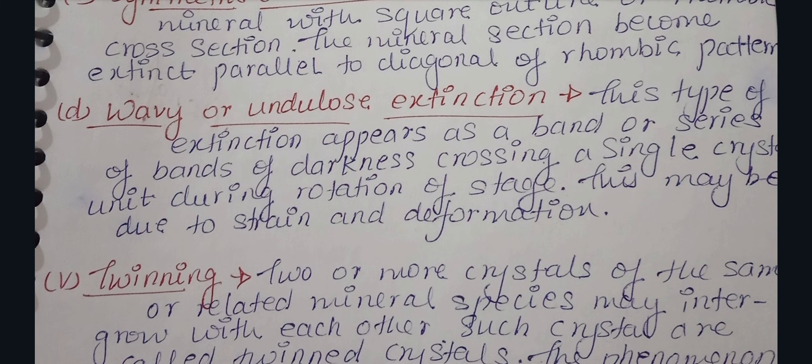The fourth type is wavy or undulose extension. This type of extension appears as a band or a series of bands of darkness crossing the single crystal during the rotation of the stage. It may be due to strain or deformation of the crystal.